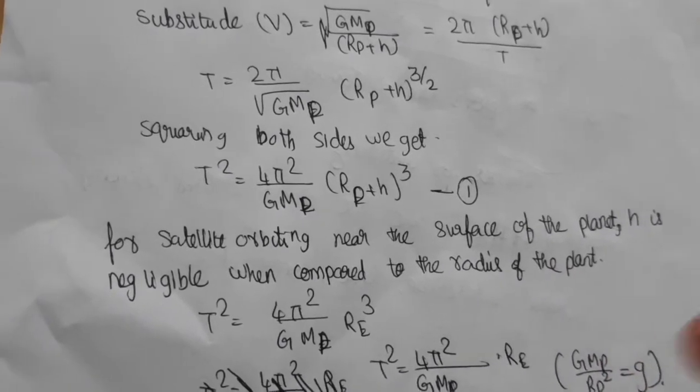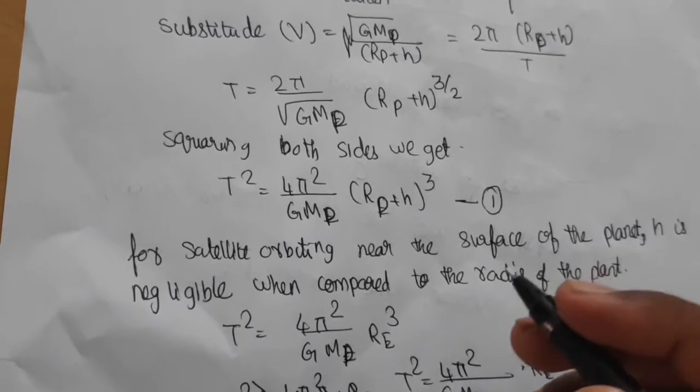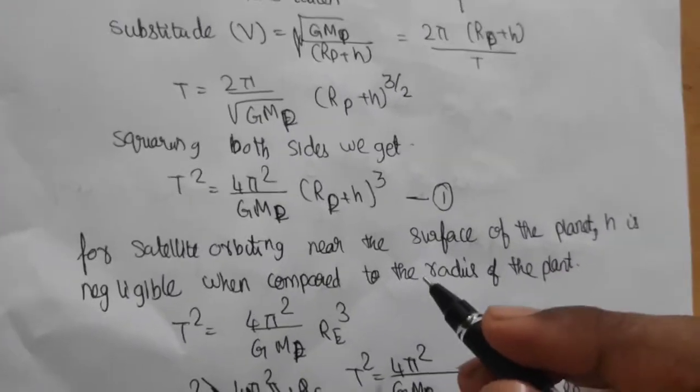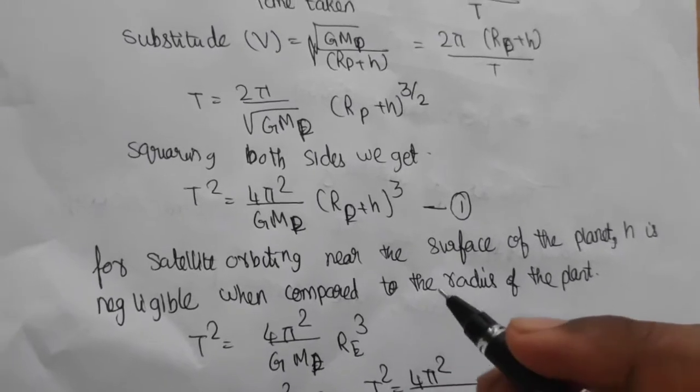So it is taken as negligible. T² = (4π²/GMp)Rp³.